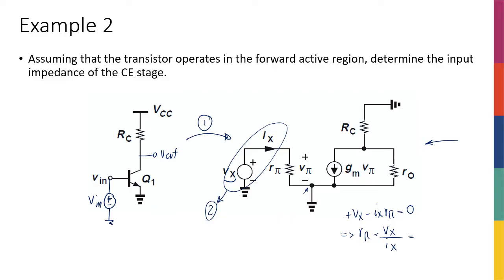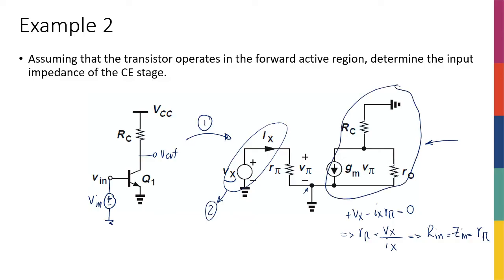This means that my Rin — input resistance, or input impedance — I'm going to use these two terms interchangeably. They mean the same thing as long as you don't have any reactance, capacitors, or inductors in your circuit, which we don't in this course. So Rin or Zin is going to be equal to Rπ. For a common emitter amplifier looking into the base, the input resistance is equal to Rπ. I know Rπ is just beta over gm. As long as you find the relationship between VX and IX, you're pretty much done.